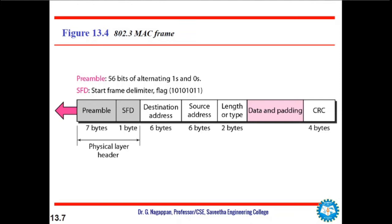The destination address is 48 bits, that is 6 bytes, and contains the link layer address of the destination station or stations. We will discuss that a little later. The source address is also 6 bytes, that is 48 bits.